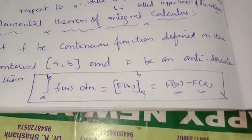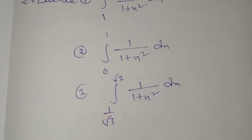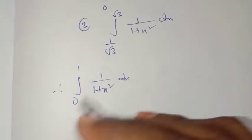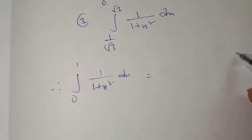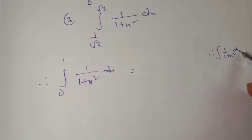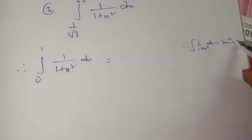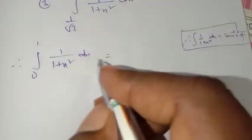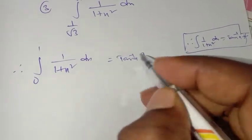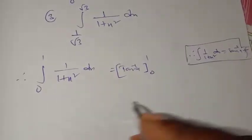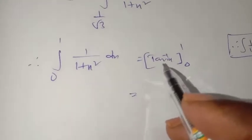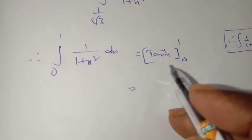Let us evaluate the integral ∫1/(1+x²)dx with limits 0 to 1. We have the formula ∫1/(1+x²)dx equals tan inverse x plus c. So we take tan inverse x with limits 0 to 1, using the fundamental theorem of integral calculus, and substitute the limits.